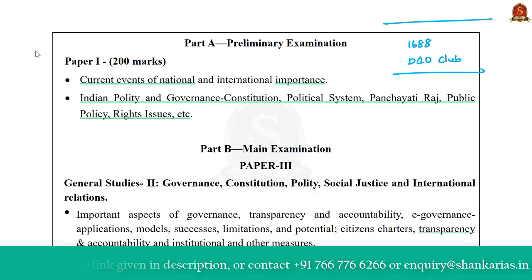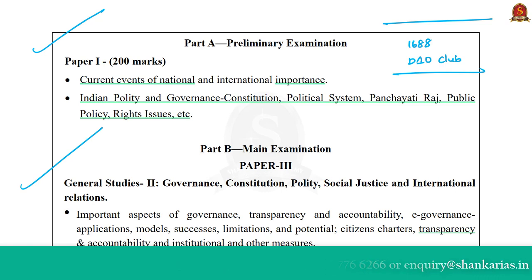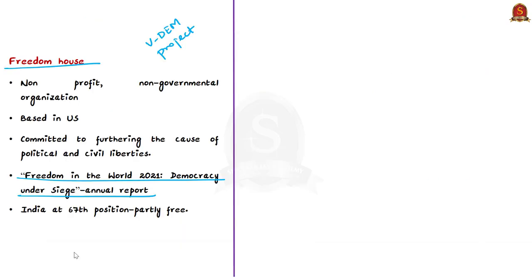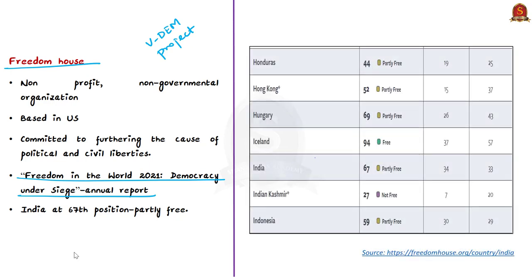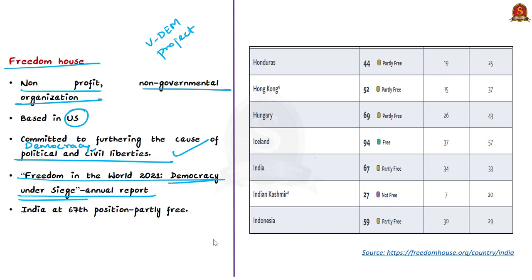The syllabus relevant for the analysis is highlighted here for your reference. The report released by Freedom House is the Freedom in the World 2021 Democracy Under Siege report. Freedom House is based in Washington DC and is a non-profit, non-governmental organization committed to furthering the cause of democracy, political rights and civil liberties. In its recent annual report, it has placed India at 67th position, rated as partly free.